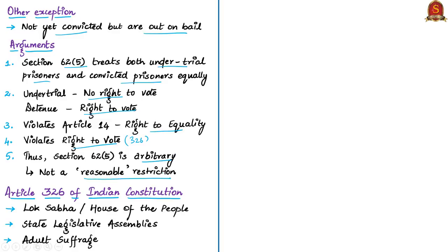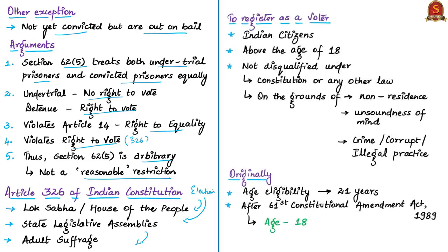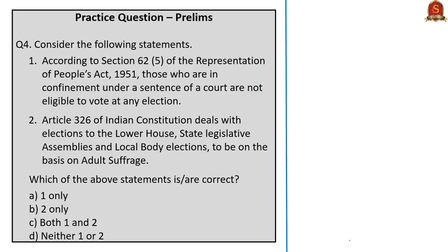Article 326 of the Indian Constitution deals with elections to the House of the People (Lok Sabha) and Legislative Assemblies of States, which are to be based on adult suffrage. Only Indian citizens above the age of 18, not disqualified on grounds of non-residence, unsoundness of mind, or crime or corrupt or illegal practice, are eligible as registered voters. Originally the Constitution fixed voting eligibility at 21; this was changed to 18 by the 61st Constitutional Amendment Act of 1989.